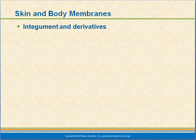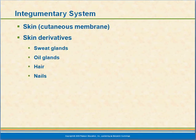This part covers Chapter 4, on integument and its derivatives. This is a rather long presentation, so it's going to be broken up into several smaller parts. Let's begin with a discussion of the integument. The integumentary system, which is our skin, our cutaneous membrane, and the derivatives of skin — that includes sweat glands, oil glands, hair, and nails — all of these are part of our integumentary system.